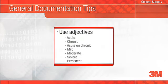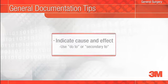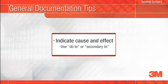Differentiate in your notes whether or not a condition is acute, chronic, or acute on chronic whenever appropriate. For example, write 'anemia due to acute blood loss' instead of 'blood loss anemia.' Use 'due to' or 'secondary to' to indicate cause and effect and to record all conditions the patient may have, such as acute systolic heart failure due to or secondary to hypertension.